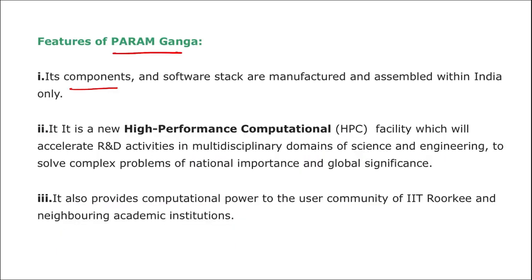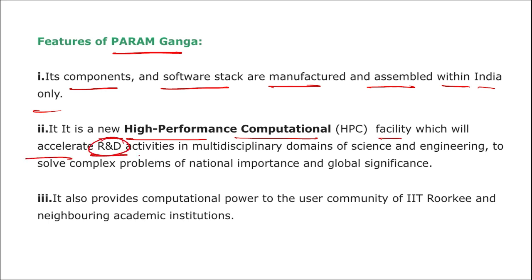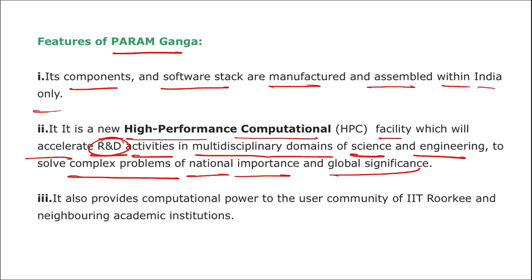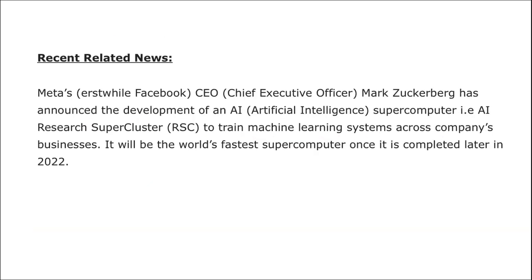Some features of Param Ganga: its components and software stacks are manufactured and assembled within India only. It is the new high-performance computational facility that will accelerate R&D activities in multi-disciplinary domains of science and engineering to solve complex problems of national importance and global significance. It also provides computational power to the user community of IIT Roorkee and neighboring academic institutions.